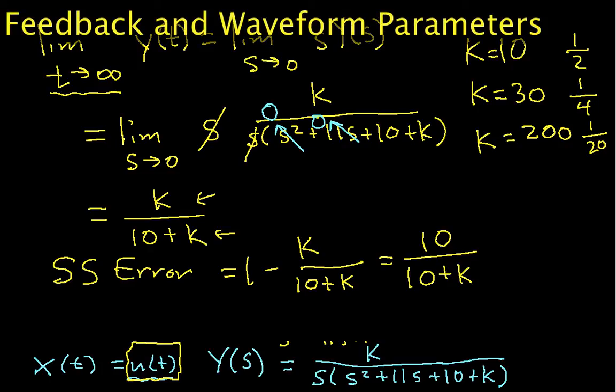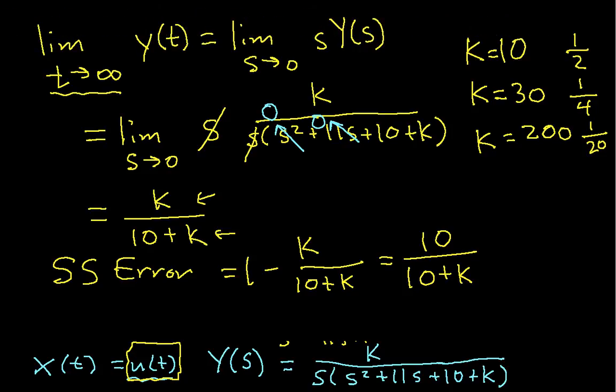Okay, this is part two of the video describing how feedback affects waveform parameters. In part one, we discovered, using the calculations that are still on the screen, that the steady state error depends on the gain that I use to multiply my error with. And we'd now like to look at some of the other parameters of a waveform that are affected by the gain.